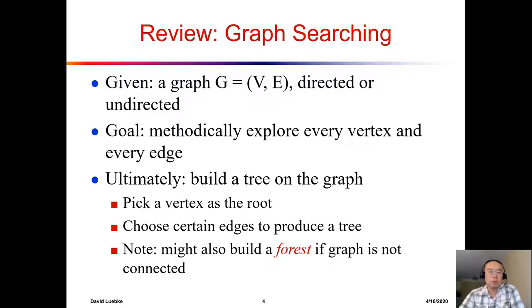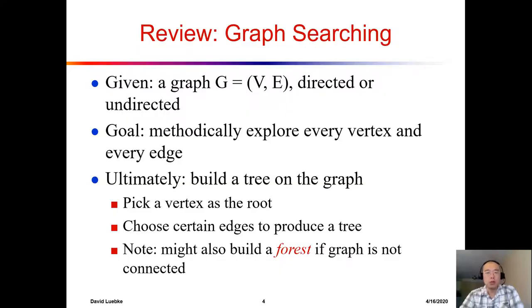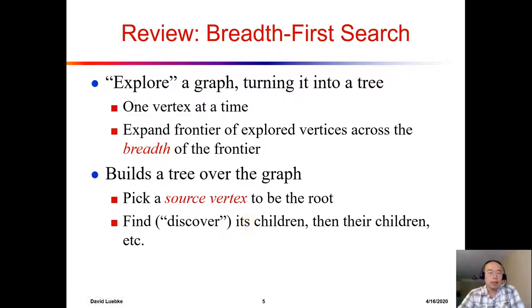For graph traversal, we want to achieve two different goals at the same time. Goal one is to explore every vertex and every edge. Goal two is to create a tree structure — we keep all the nodes but only pick a subset of edges to form a tree. If parts of the graph are not connected, then a single tree won't work, and in that case we have to create a forest.